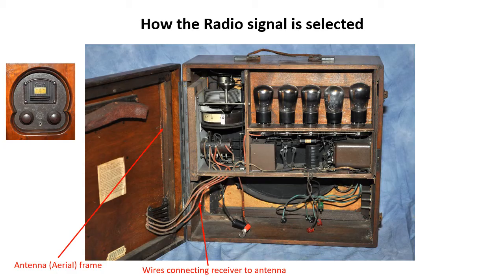Since several radio stations may be received at the antenna at the same time, a tuned circuit is used in the radio receiver to select the wanted carrier frequency and to reject the unwanted frequencies. A tuned circuit consists of two electronic components: a coil and a capacitor. When the tuning control on the side of the set is turned, it moves the interleaved plates on the tuning capacitor as shown. This changes the frequency that the tuned circuit selects, so that it passes some frequencies to the rest of the radio and rejects others.